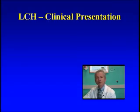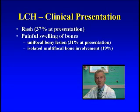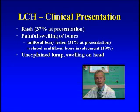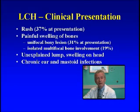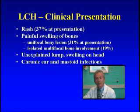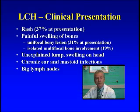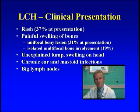Most children present with either a skin rash or painful swelling of some bone. They might have a squishy bump on the head that looks like it came from an accident, or swelling around the ear at the mastoid bone. They might have swelling around the eye causing proptosis — where the eye seems to be sticking out — or big lymph nodes that look like they have an infection, similar to what you'd see with a strep throat.